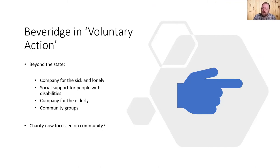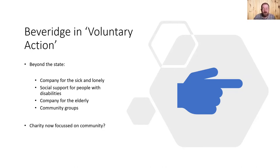After the welfare state was established, Beveridge worked on what he thought charity should do. He imagined charity as something more intuitive — community spirit: company for the sick and lonely, social support for people with disabilities, company for old people, and community groups. So with the state alleviating poverty and providing education, what's left for charity? According to Beveridge, it's community.